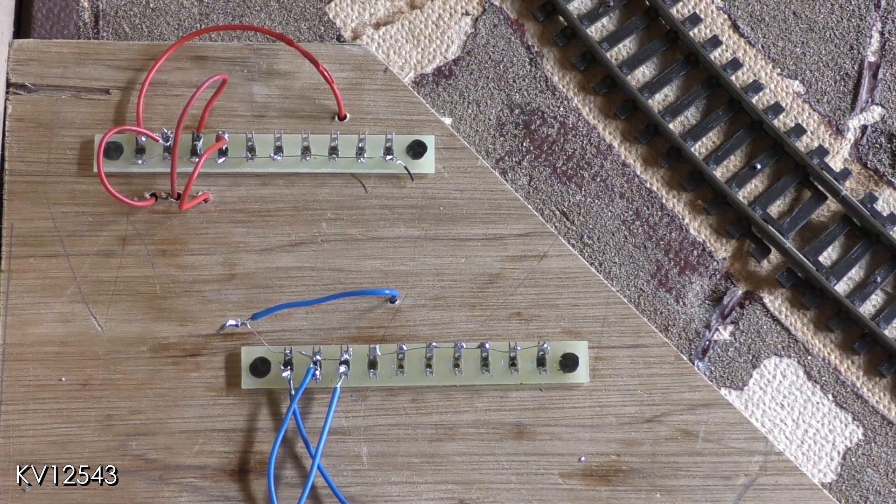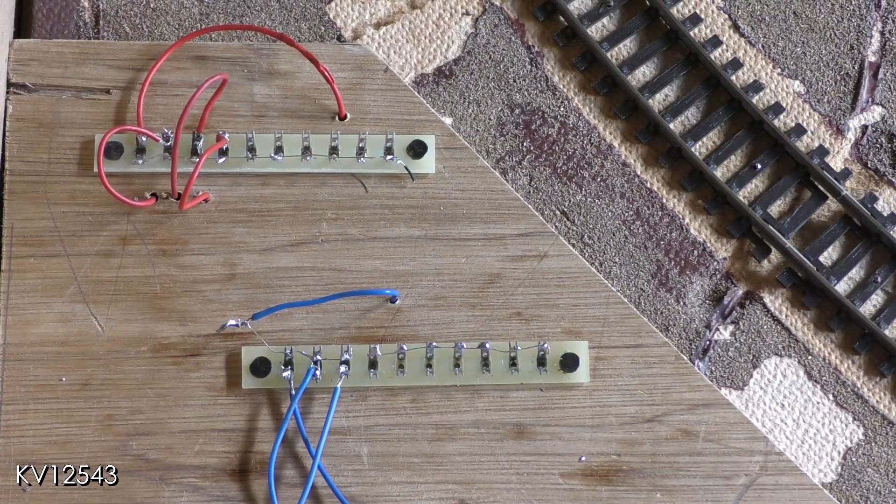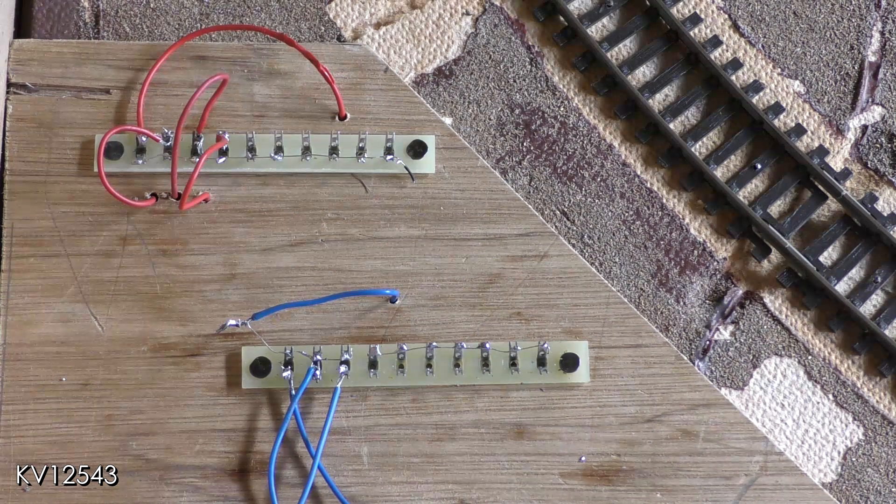The tag strips are located just behind the control panel and the controller socket and point and section switches obviously on the control panel itself.